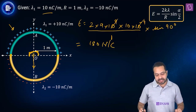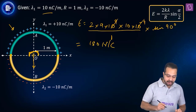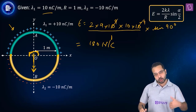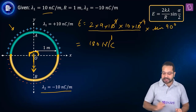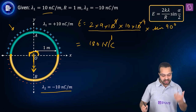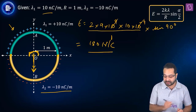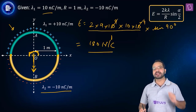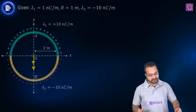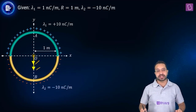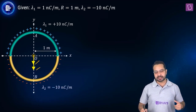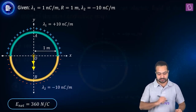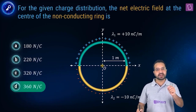For the negatively charged bottom half, the electric field is also directed downward because the field points toward a negative charge. Since the magnitude of λ, the radius, and α are all the same, the magnitude is also 180 N/C. The net electric field is the vector sum: 180 + 180 = 360 N/C. Option D is correct.